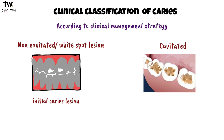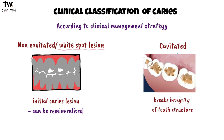An initial caries lesion is one that has not been cavitated. In enamel caries, non-cavitated lesions are also referred to as white spot lesions. Most initial caries lesions can be arrested or remineralized without any restorative intervention. A cavitated caries lesion results in the breaking of the integrity of the tooth, and all cavitated lesions require restorative treatment.